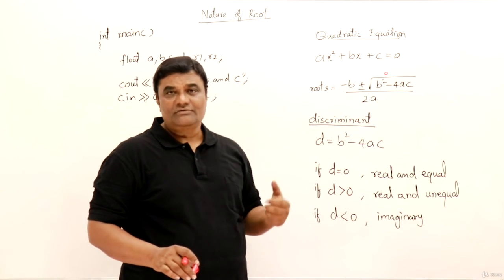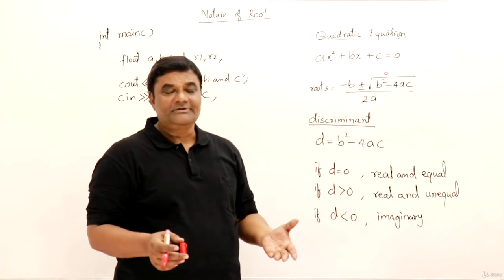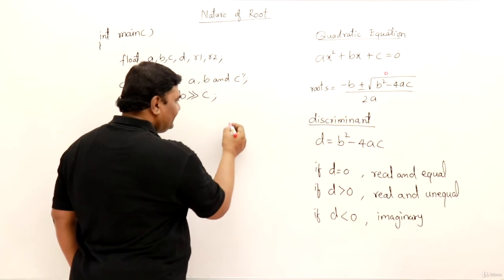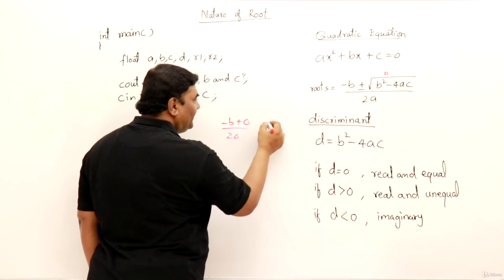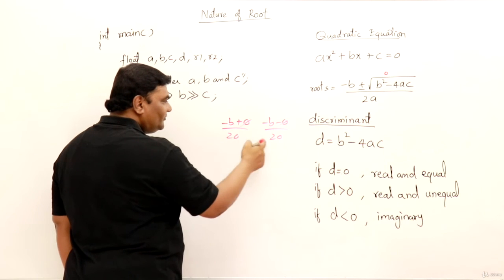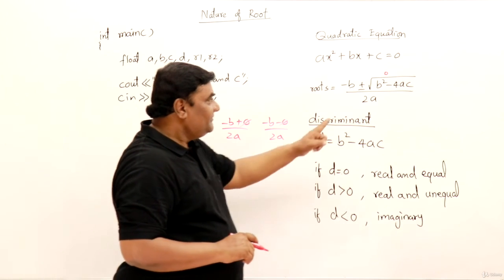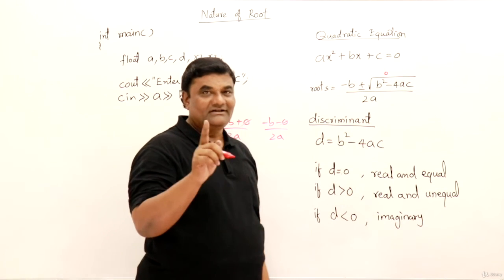Whether you take plus or minus you get the same answer. What is that? Minus b by 2a. So this means if you take both the roots, both the roots are same only. Because if you take plus 0 also you get the same answer, minus 0 also same answer. So both the roots are same, both the roots will be equal. This means b square minus 4ac if it is 0 then both the roots will be equal.